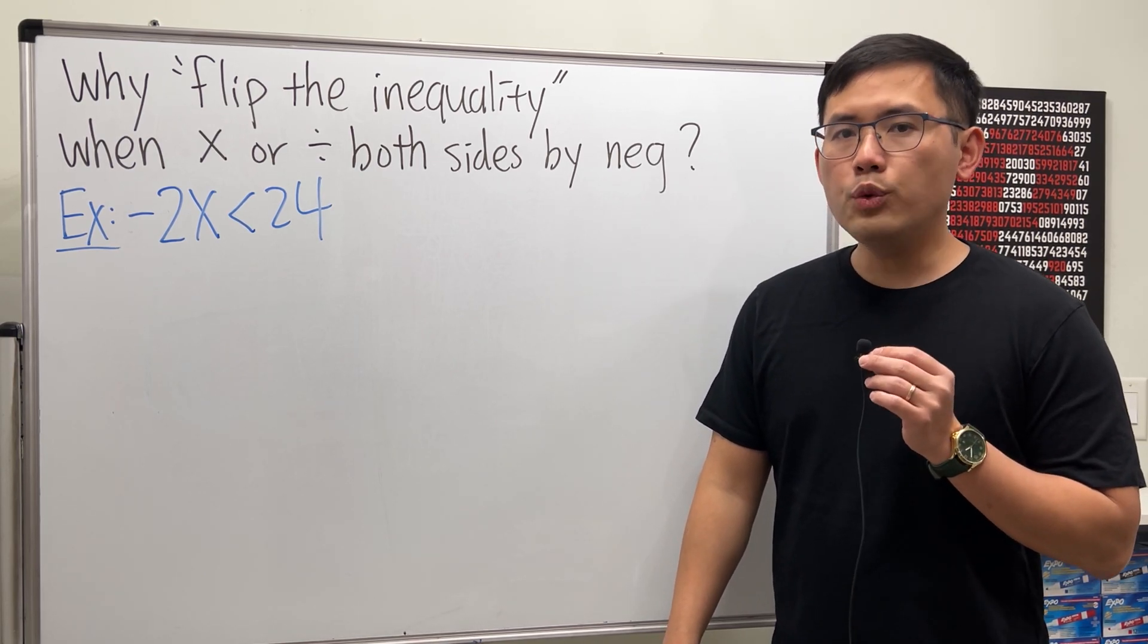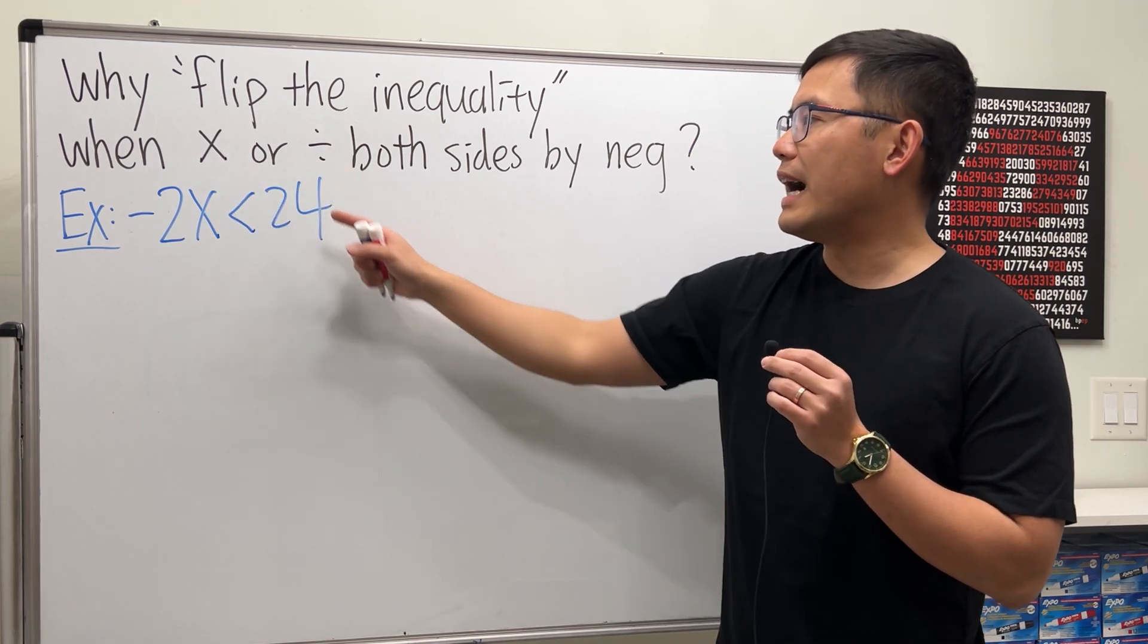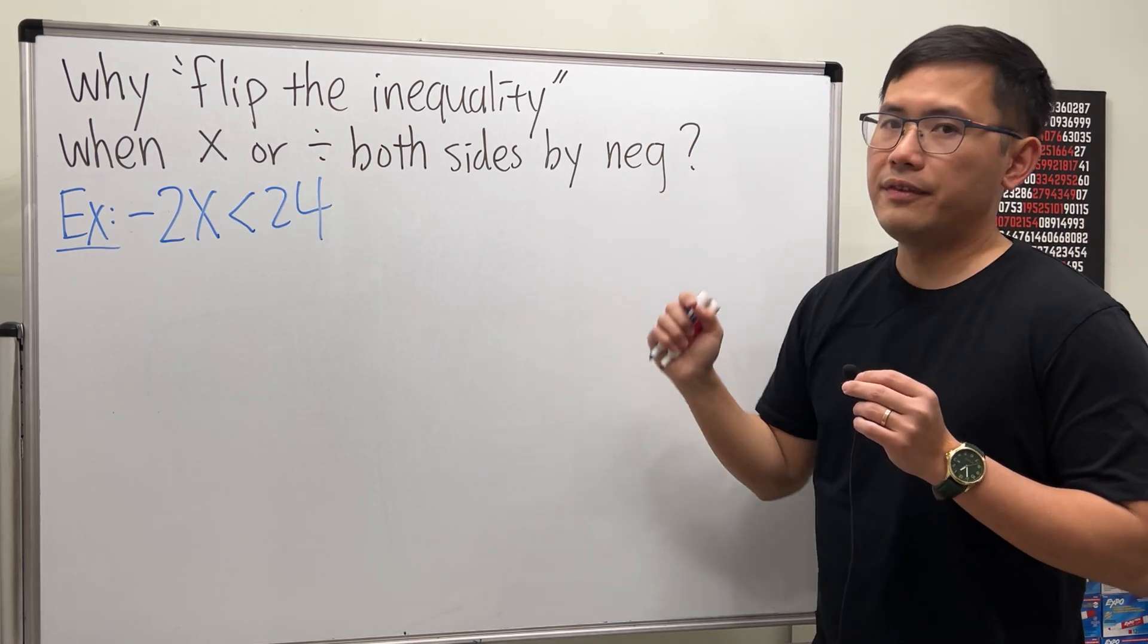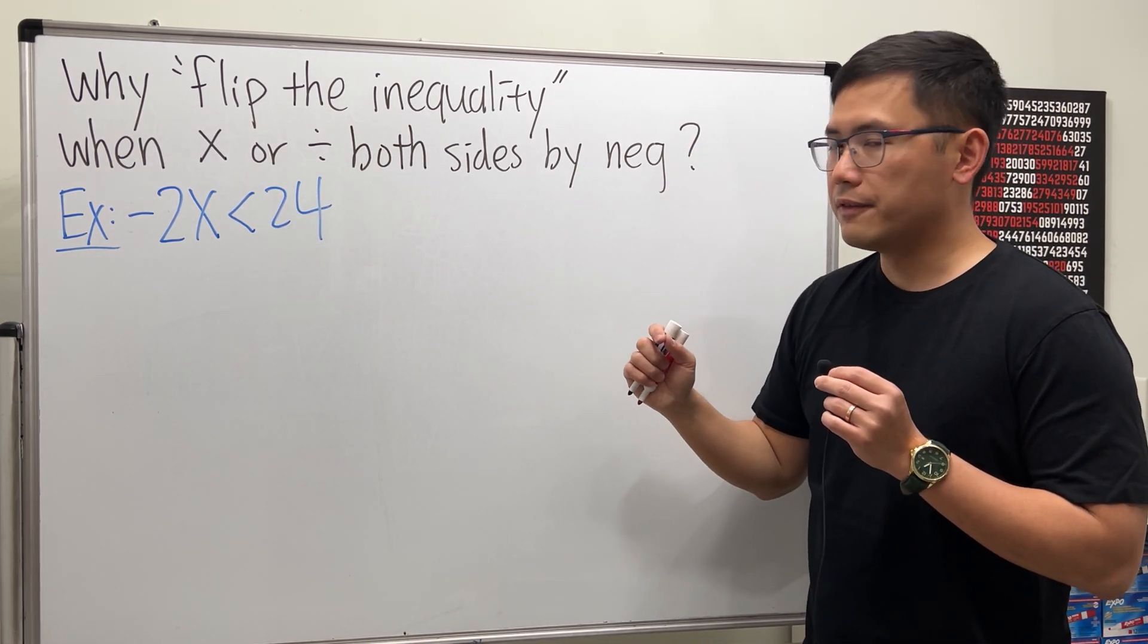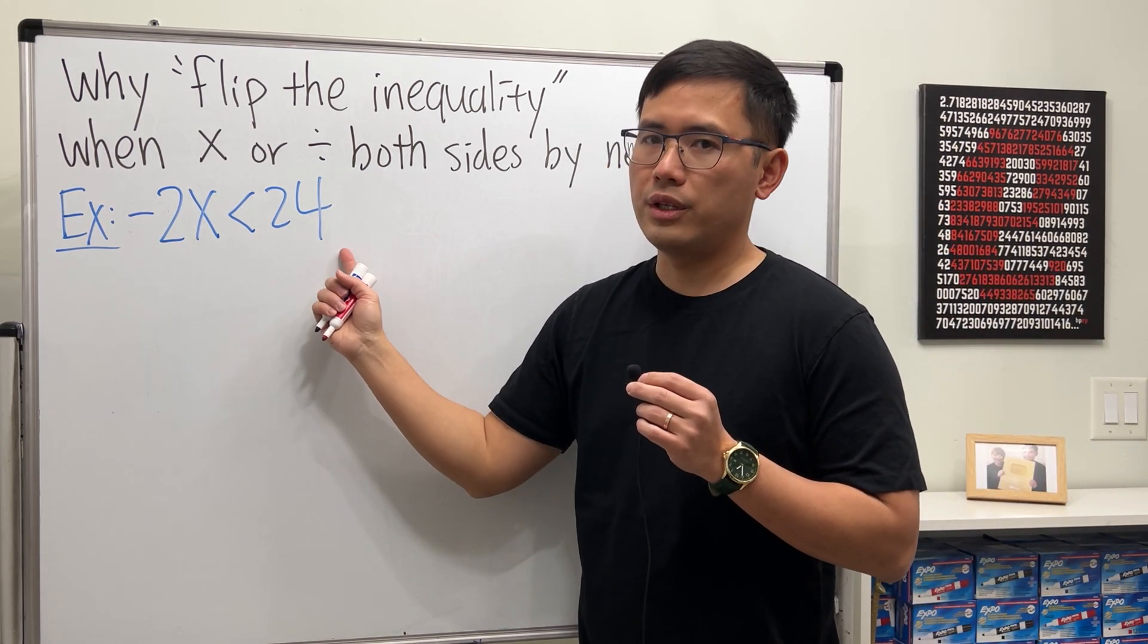In this video, let's talk about why we have to flip the inequality when we multiply or divide both sides by a negative number. What I mean by this is the following: suppose we're trying to solve negative 2x is less than 24.